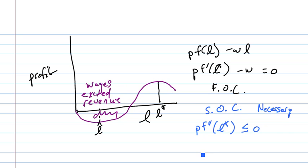If this held as a strict inequality, so pf''(L*), if this was strictly less than zero, that would be sufficient for a max. So the first order condition and this second order condition together are sufficient for a max.